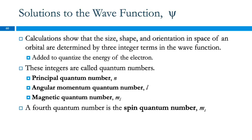We can know the energy, but then we can't know the position — the best we can do is this wave function. So these three integers are called quantum numbers: there's the principal quantum number n, the angular momentum quantum number l, and the magnetic quantum number m sub l.